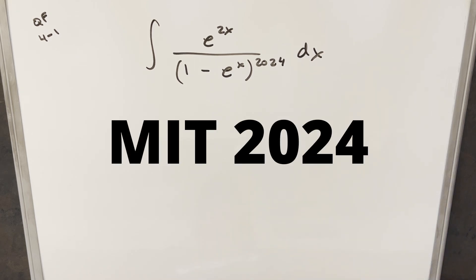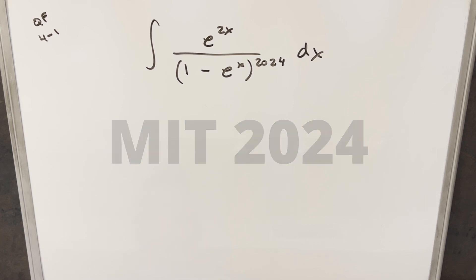Okay, we have another integral from the MIT integration. It should be 2024. This was quarterfinals round four, problem one. We have the integral of e to the 2x over 1 minus e to the x to the 2024 dx.